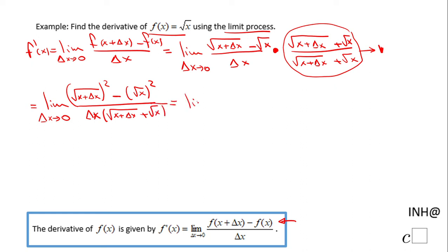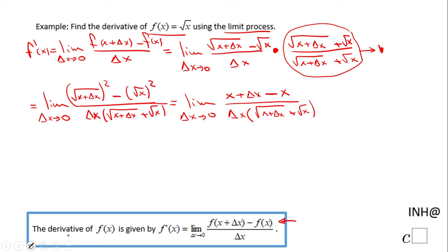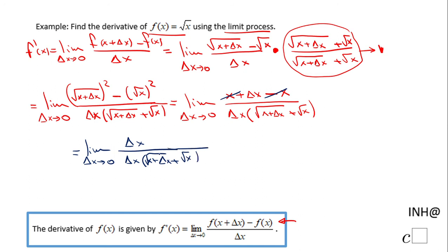Now let's see what happens: limit as delta x approaches zero — the first square cancels out the root, so we get x + delta x; the second one cancels out the square root as well, giving minus x. So the numerator becomes (x + delta x) minus x, over delta x times (square root of (x + delta x) plus square root of x). Notice these two guys cancel out, leaving delta x over delta x times that quantity. The delta x cancels out.